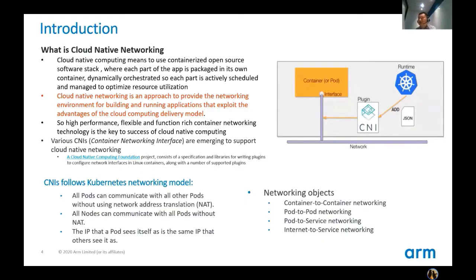Firstly, I would like to talk about what is cloud-native networking. Cloud-native computing means to use containerized open-source software stack, where each part of the app is packaged into its own container, dynamically orchestrated so that each part is actively scheduled and managed to optimize resource utilization. Cloud-native networking is an approach to provide the networking environment for building and running applications that exploit the advantages of the cloud computing delivery model. High-performance, flexible, and function-rich container networking technology is a key to the success of cloud-native computing.